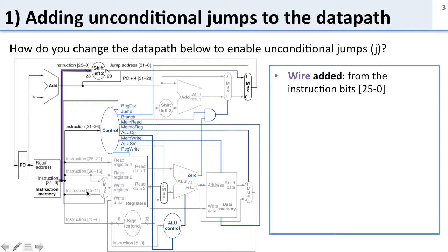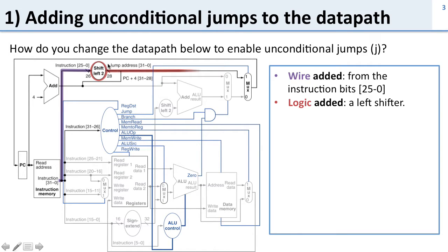We added a wire here from the instruction bits to the shifter. This is the wire that takes the instruction bits from the jump instruction. Remember, there are a bunch of bits in the instruction used for this constant, and it's going to pass around this datapath back into the next PC. We need to add some logic.